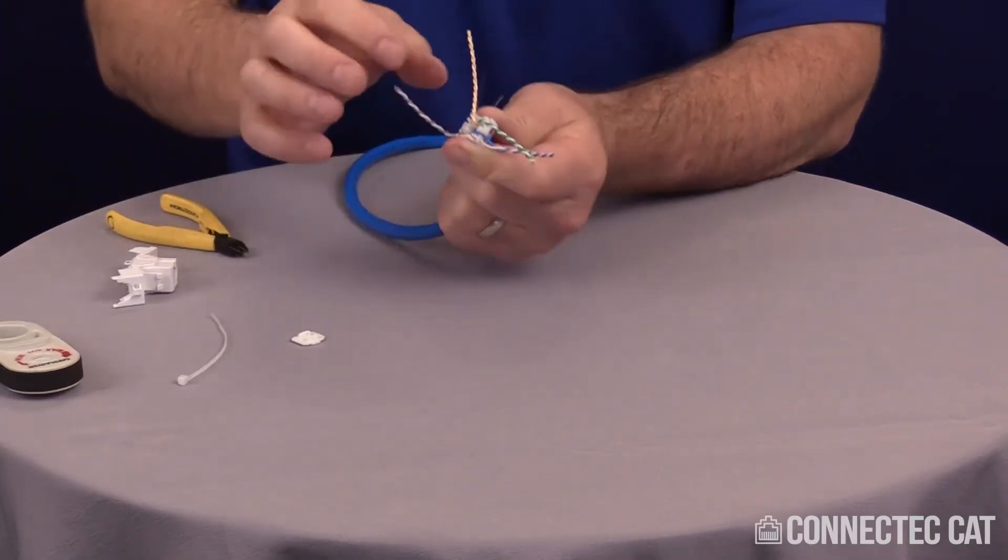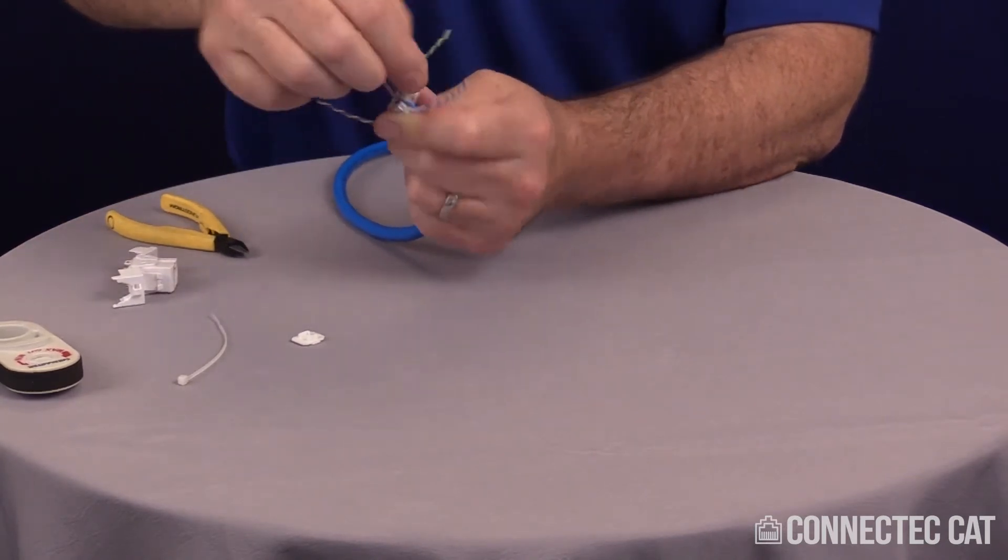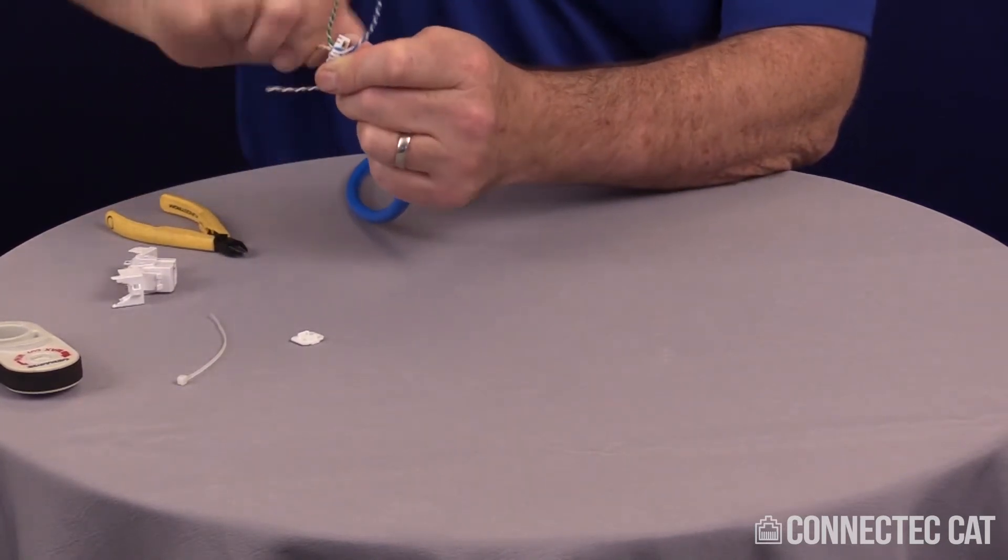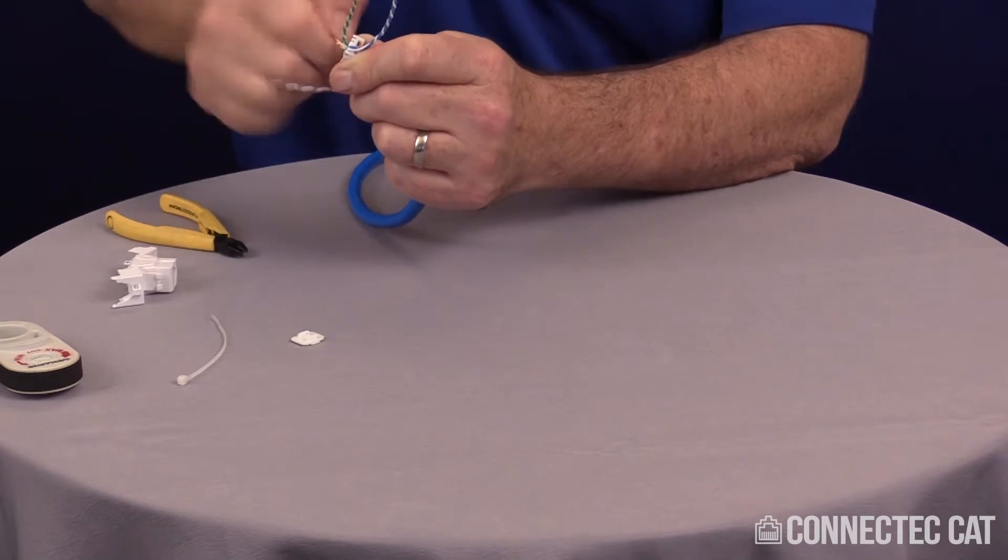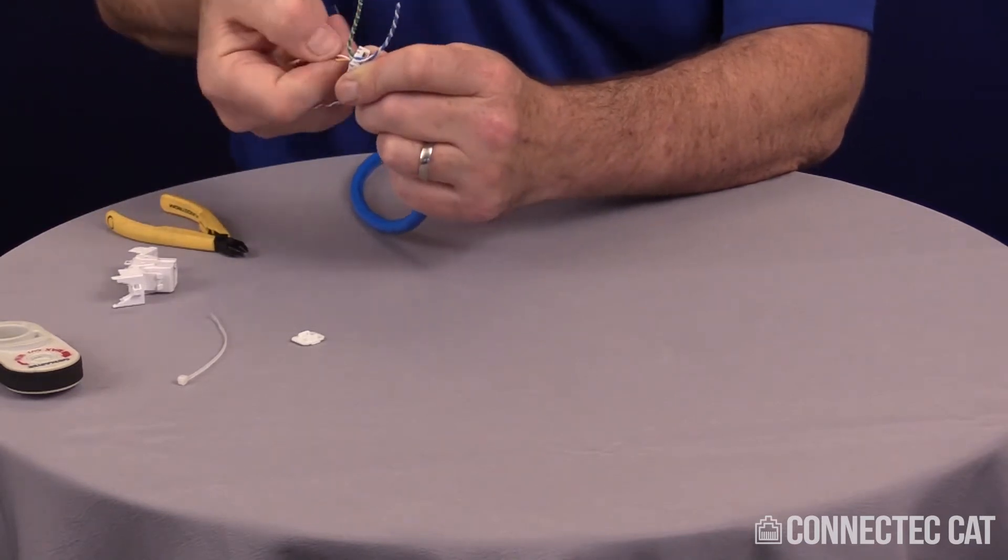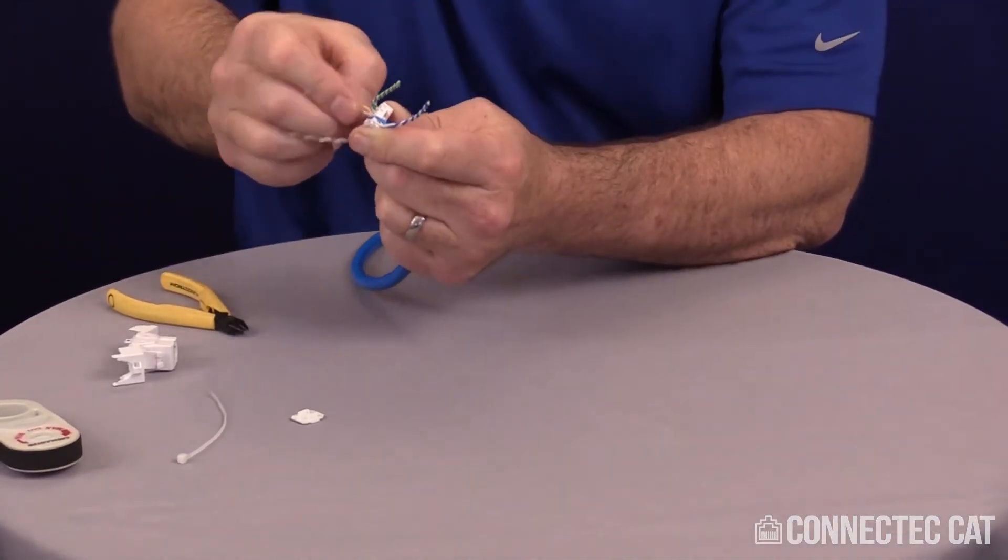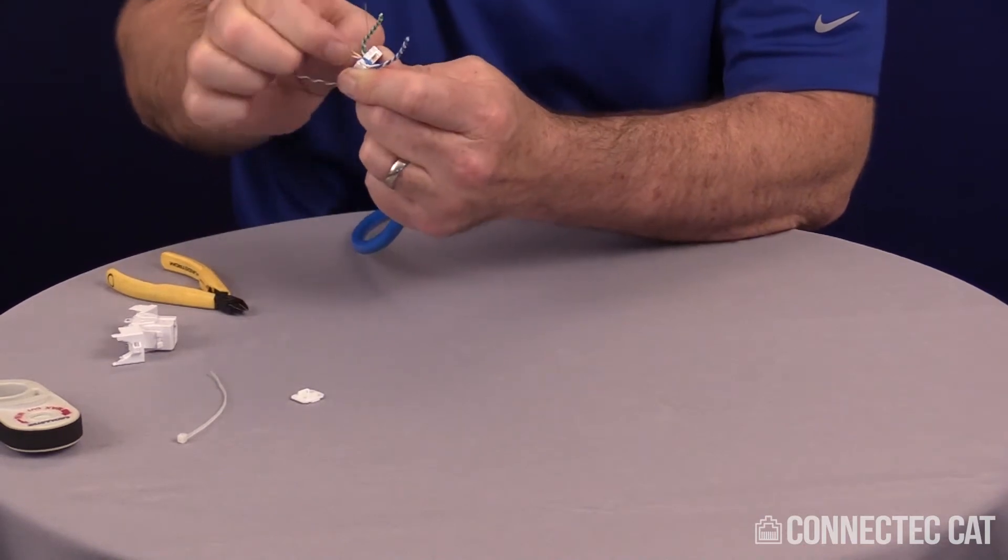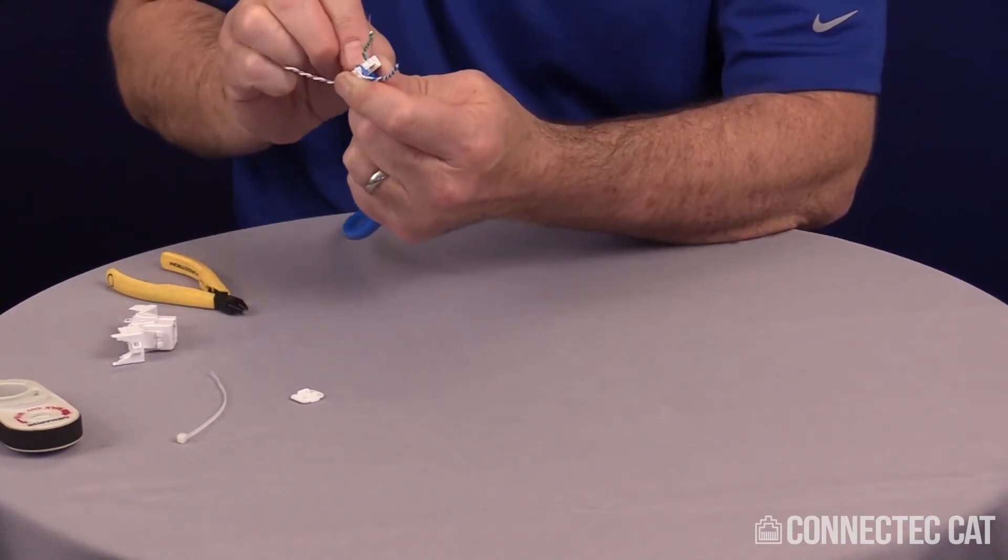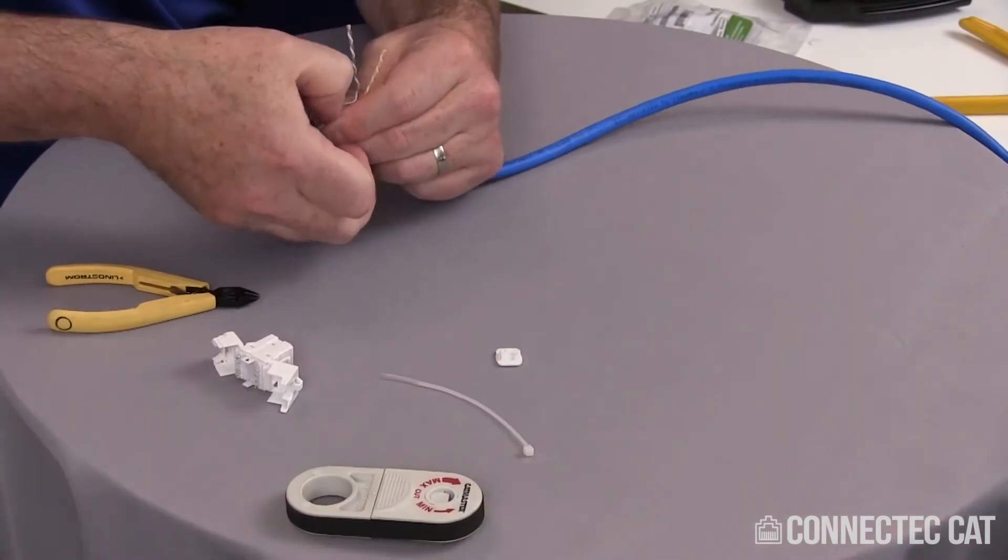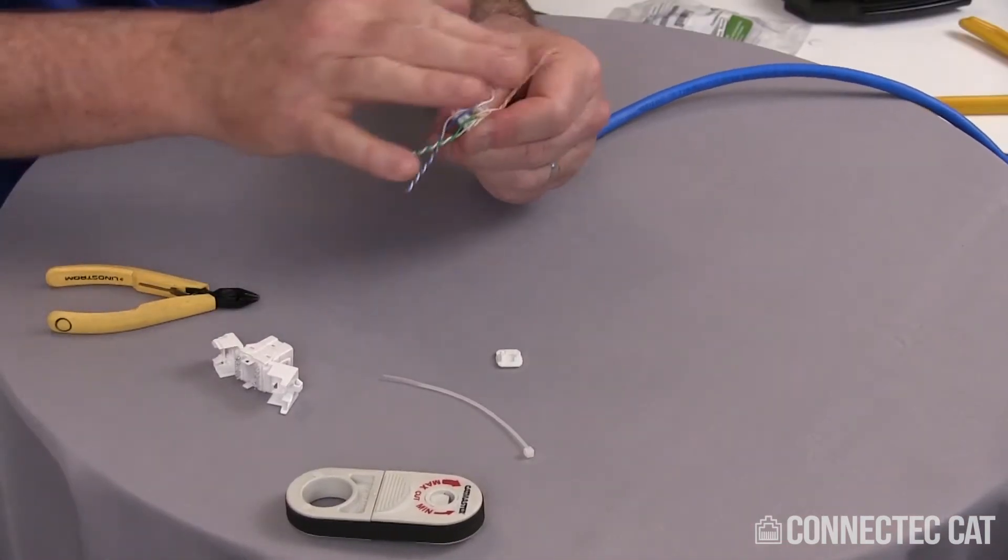You want to make sure they're down inside those cable paths, because if they're not, the connector won't close all the way. Now the green and the orange here, I've got to overlap over each other. Sometimes you have to separate them a little bit to get them to go into those traces. Once you have all these lined up and all the cables are actually in the traces, this is ready to reassemble.